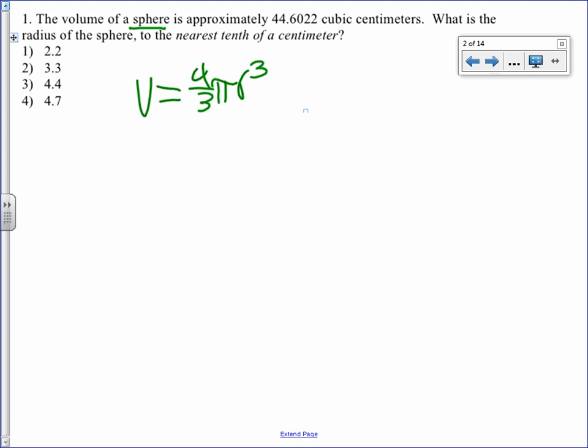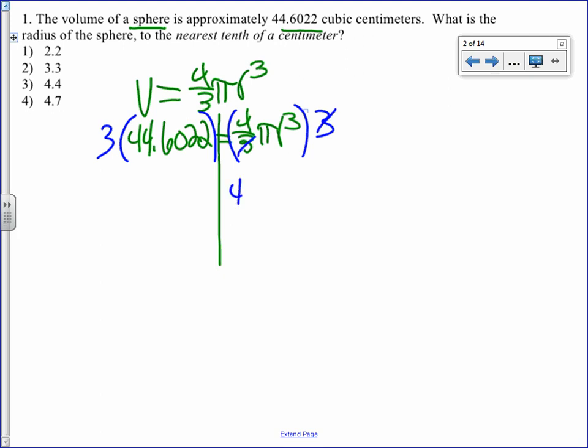v, in this example, is 44.6022 equals 4 thirds pi r cubed. From here, we have to solve the equation. To get rid of the fraction, I can multiply both sides by 3. When I do that, I get 4 pi r cubed.